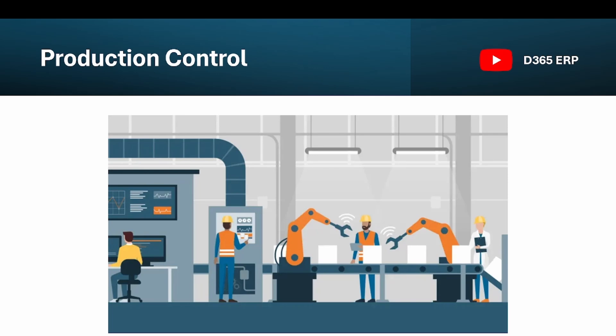We will start with some fundamentals of Production Control, covering different production types and different production strategies, how we will configure these strategies and some basic setups in Dynamics. Then we will explore various advanced topics concentrating on discrete manufacturing. In the first episode we will also differentiate between discrete manufacturing, process manufacturing, and lean manufacturing.